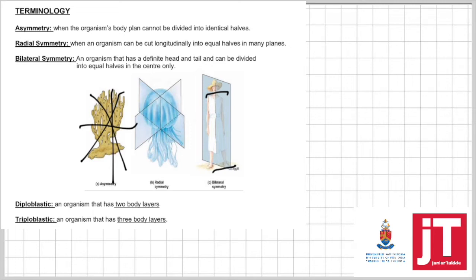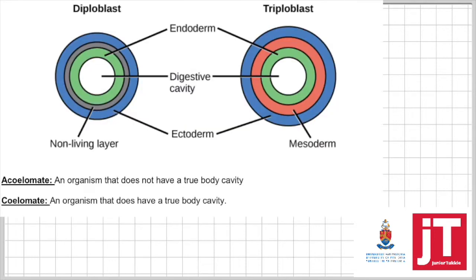Now let's move on to body layers. Diploblastic — di means two. It's when an organism has two body layers, and triploblastic is when an organism has three body layers. If you look at these pictures, this is the organism that is diploblastic and this is an organism that's triploblastic. The outer body layer is the ectoderm and the inner body layer is the endoderm.